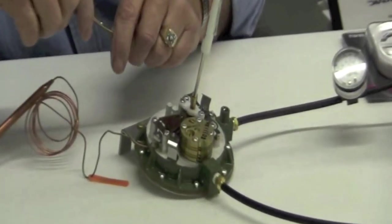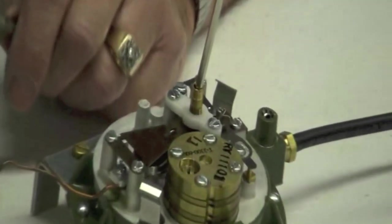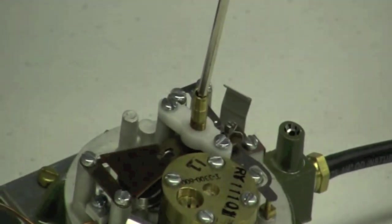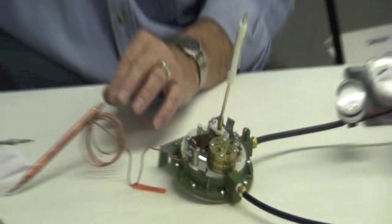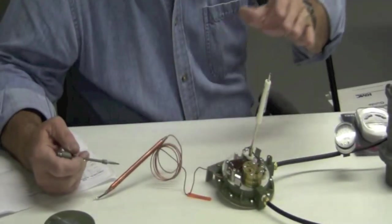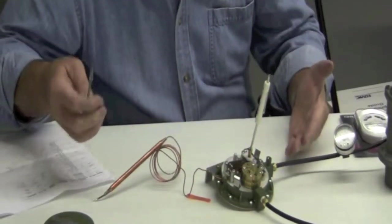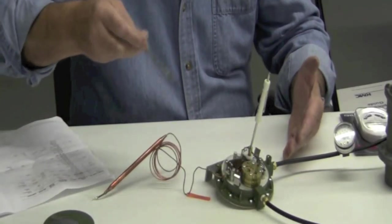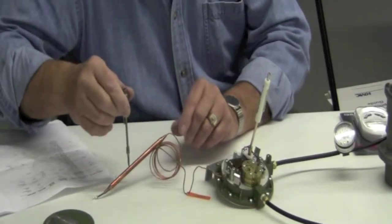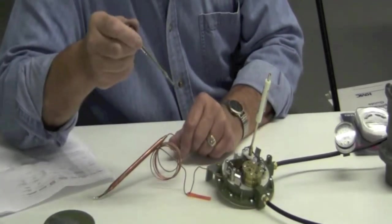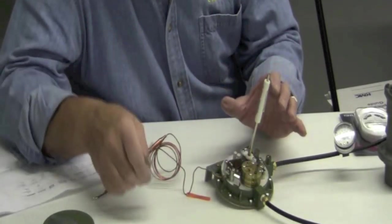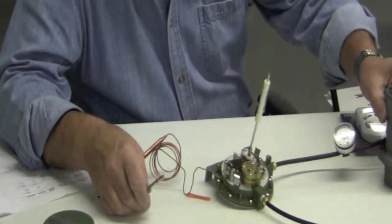When we're reverse acting, that means that as the set's temperature increases above the set point of this bulb, the output pressure will decrease. Direct acting as the set's temperature goes above set point on the controller of the thermostat, temperature drops, pressure drops, temperature increases, output pressure increases to this control device.